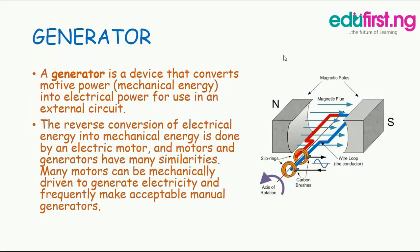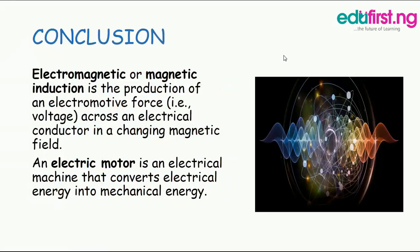In conclusion, a battery is a device consisting of one or more electrical cells with external connections for powering electrical devices such as flashlights, mobile phones and electric cars. Electroplating is a process that uses an electric current to reduce dissolved metal cations so that they can form a thin, coherent metal coating on an electrode.